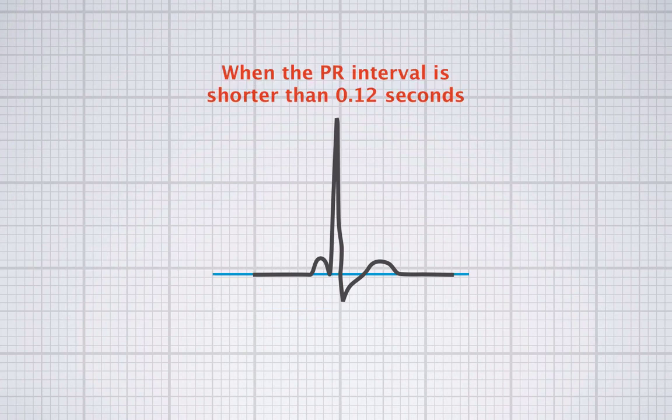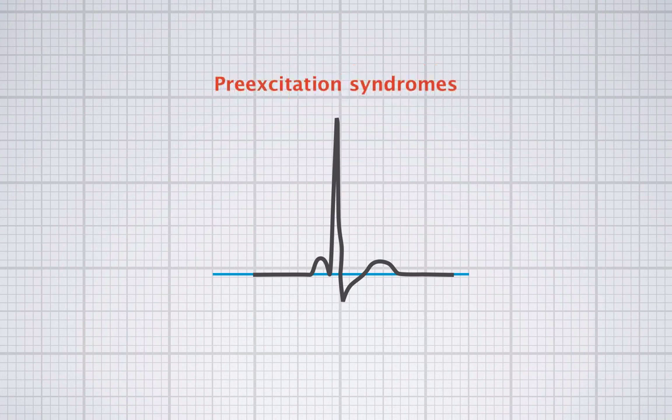Now let's turn to situations when the PR interval is shorter than 0.12 seconds. When the PR interval is shorter than 0.12 seconds, that means that ventricular depolarization starts earlier than normal. Since the AV node has a certain maximum conduction velocity, that usually indicates that there is an additional faster pathway through which the impulse can travel from the atria to the ventricles — so this time is shortened. These special circumstances are called pre-excitation syndromes.